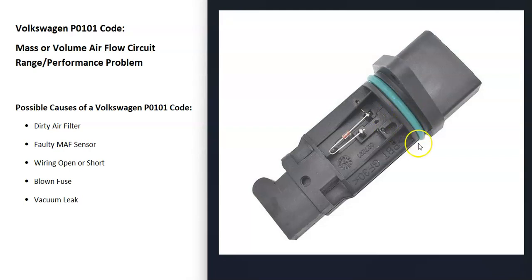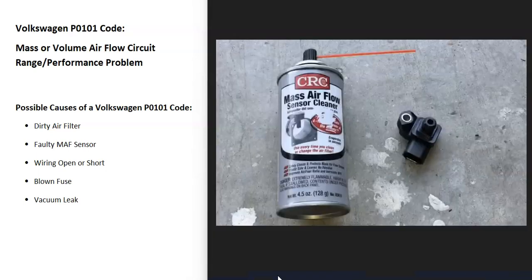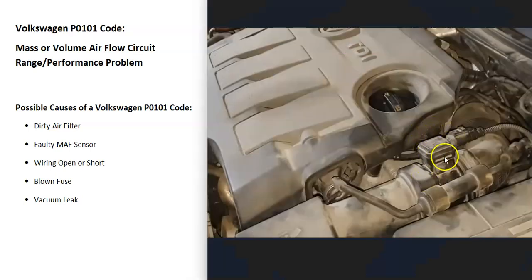The mass sensor itself can also be bad. There are a few different ways to test it — you can use a meter or an OBD2 scan tool. Quite often these mass sensors just get dirty and need to be cleaned. There's a fluid called mass airflow sensor cleaner that you can spray on them, clean them up, put them back in, clear the code, and quite often that works. Either way, check out that mass sensor and test it or replace it.